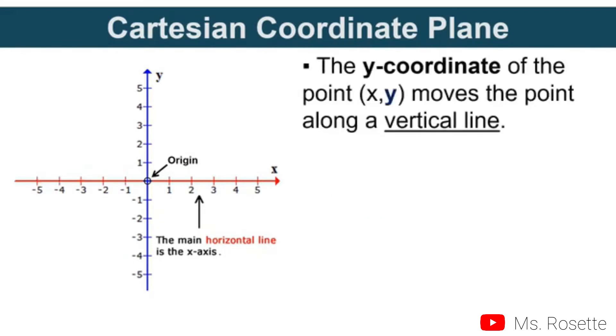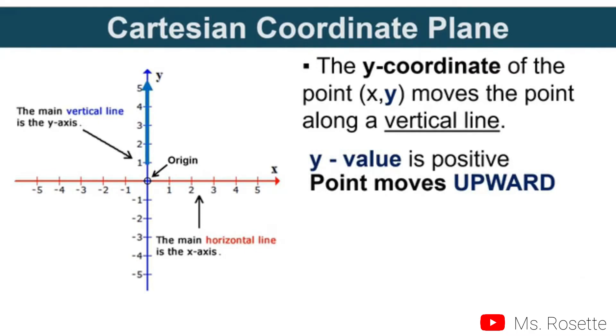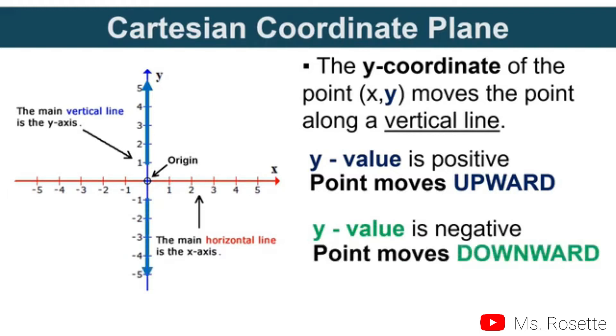The y-coordinate of the point (x,y) moves the point along a vertical line. This is the blue line that you see in our figure. If the value of y is positive, the point moves upward. If the value of y is negative, the point moves downward.